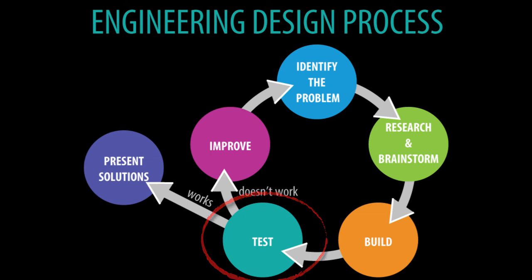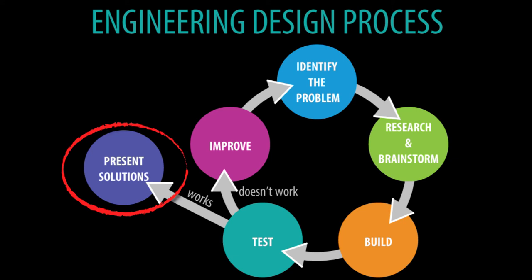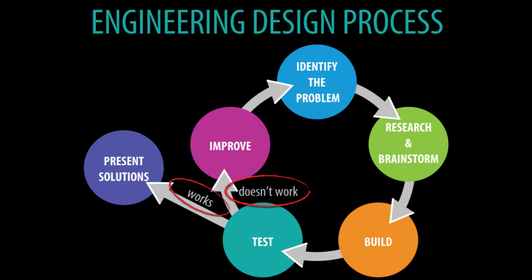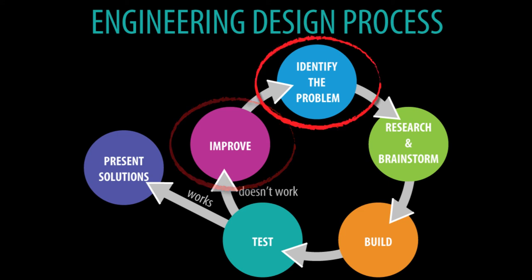This leads us to our final steps of the engineering design process: present solutions and improving our design. Everyone will be presenting their results to the class, no matter if it works or if it doesn't. Even if a design fails, that is how we learn to build something better and to improve. When we learn what works and doesn't work, then we can improve a design so it can help solve our problem even better. If we discover a new problem in the process, then we can continue the process to solve more and more problems. Ultimately, we can use this process to help solve many problems in our lives — and not just fix our own problems, but more importantly, we can help others, like a lonely person who could use a visit from a friend with a delicious bowl of ice cream.